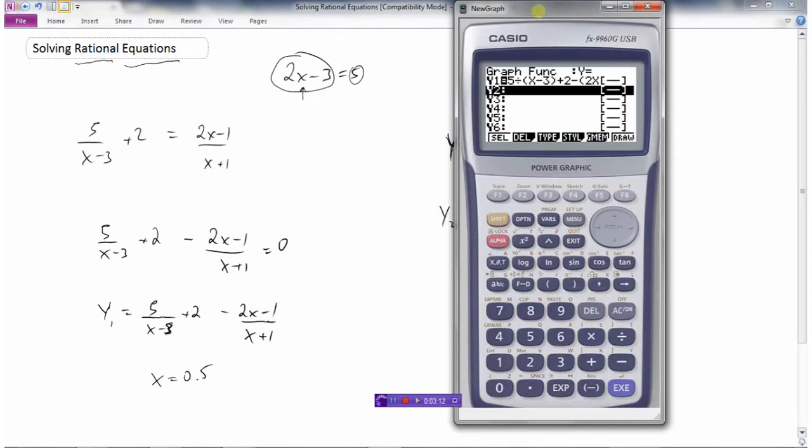I could go back in here, and I could make y1 equal to the left side, so that's 5 divided by x minus 3 plus 2. And I could make y2 equal to the right side, which is 2x minus 1 divided by x plus 1.